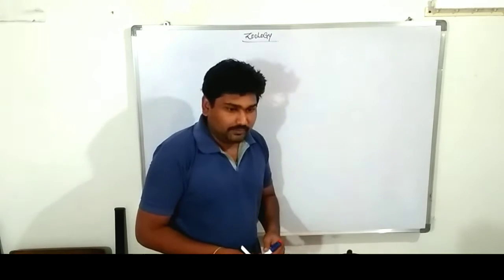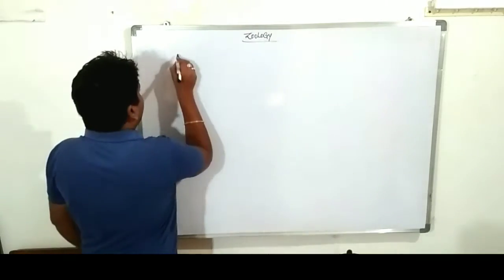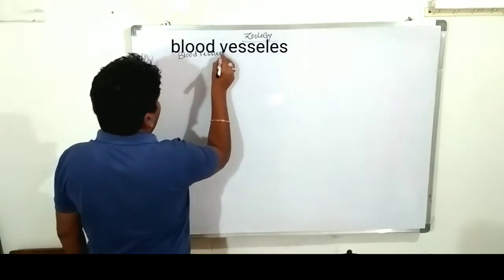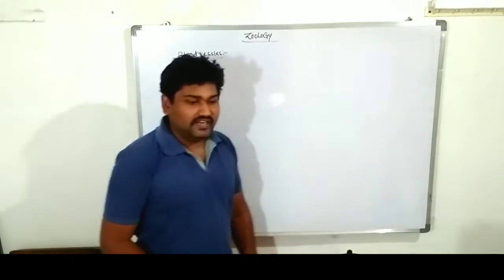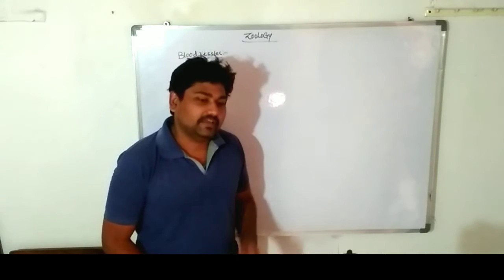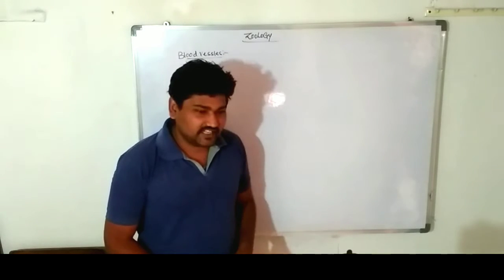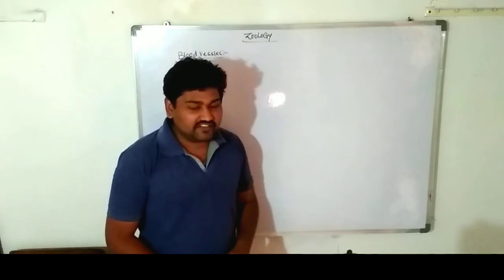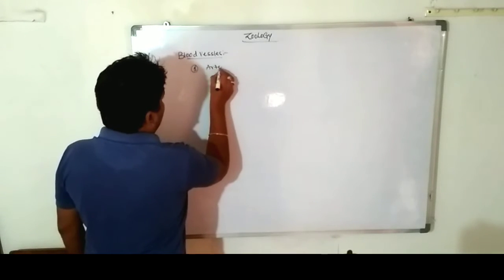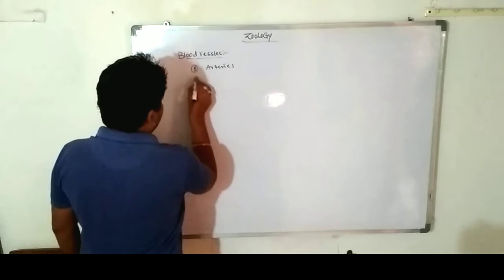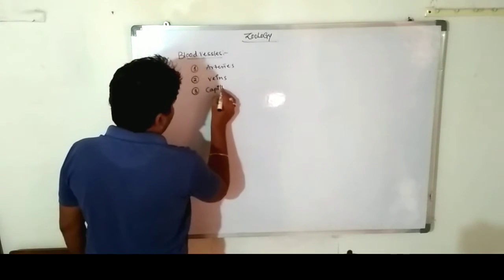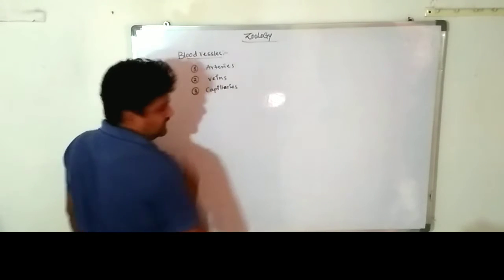Today we are discussing about blood vessels. In human beings, there are three different types of blood vessels. We may think of only two, but there are actually three: the first one is arteries, the second one is veins, and the third one is capillaries.